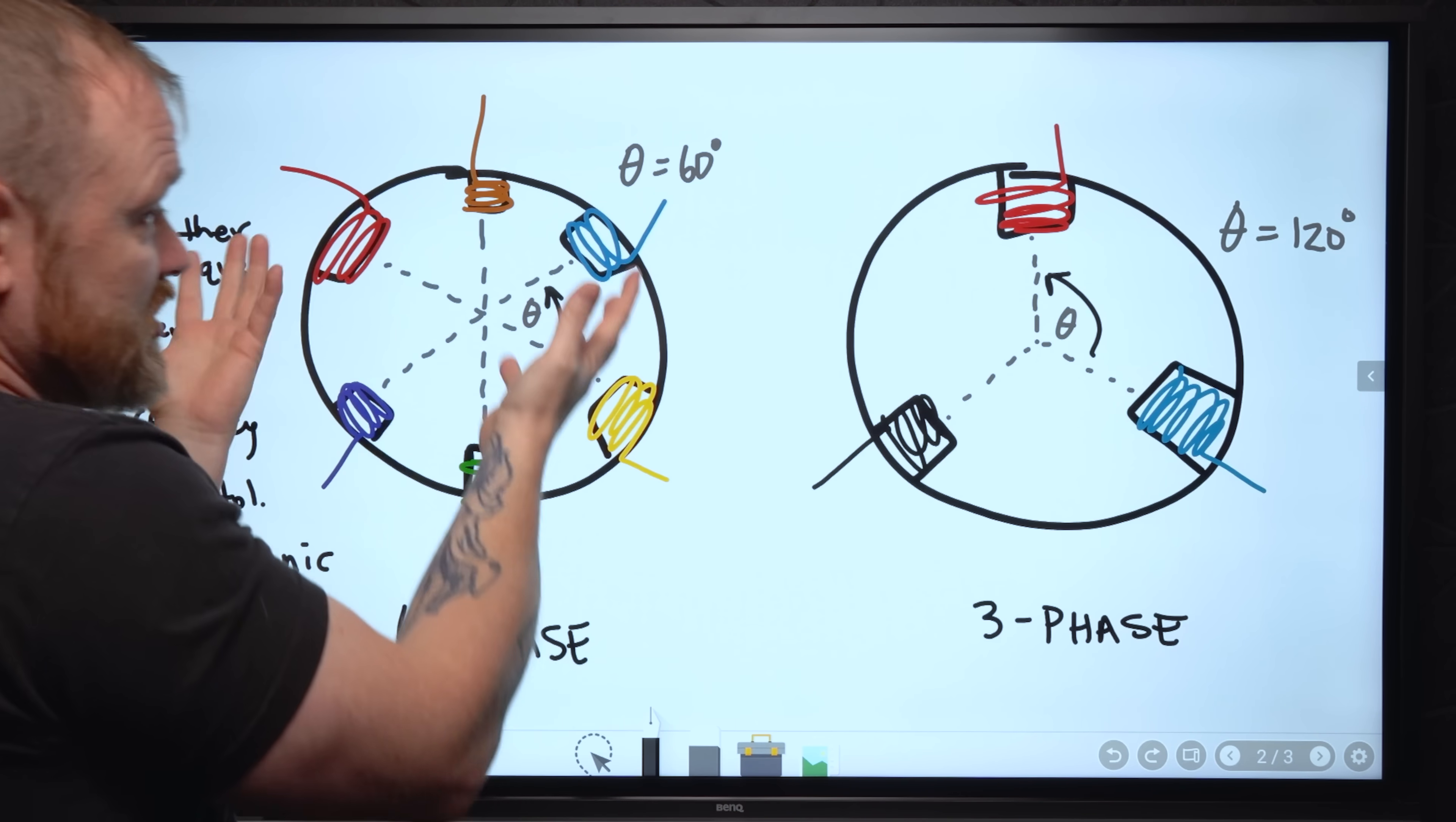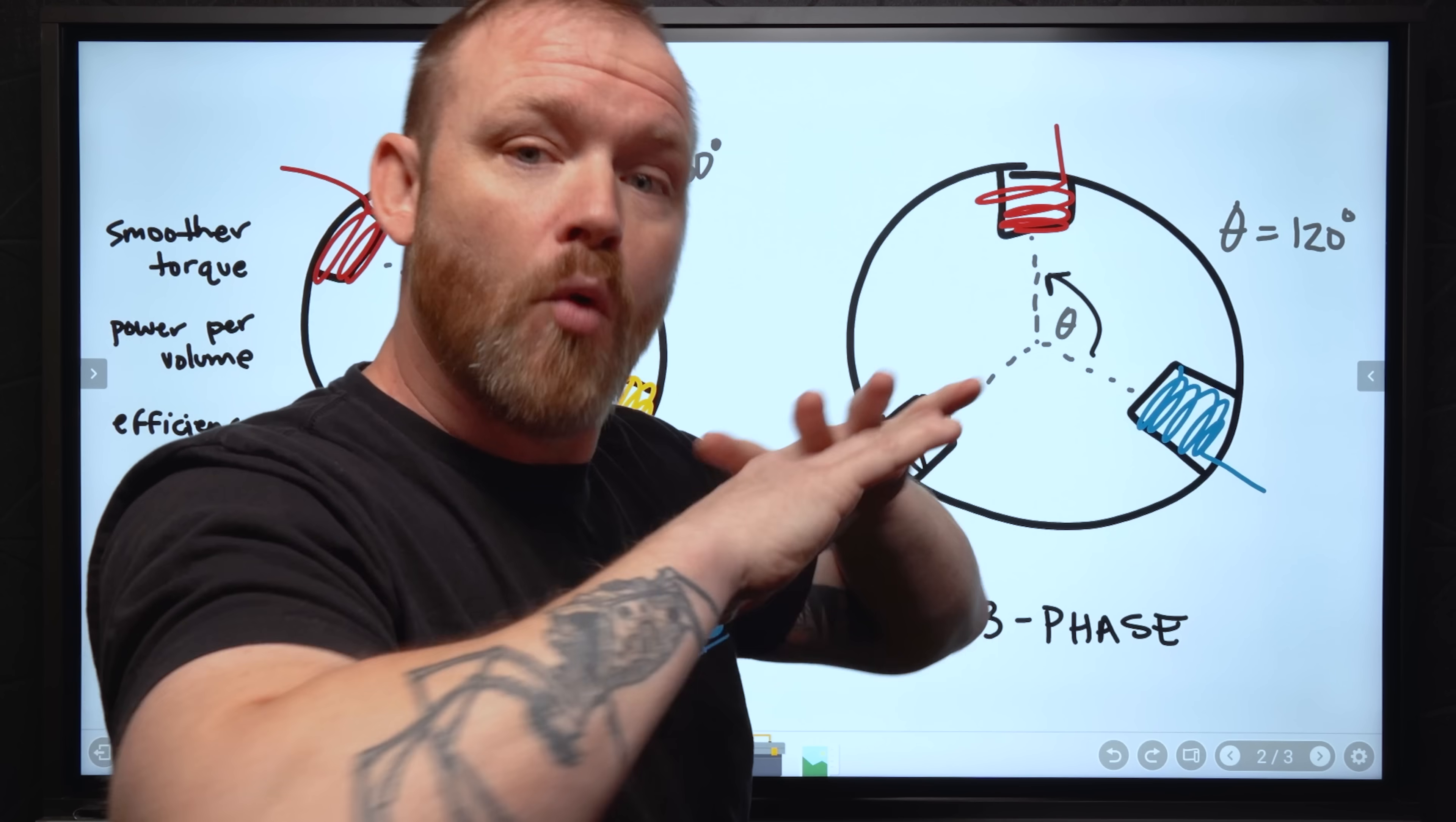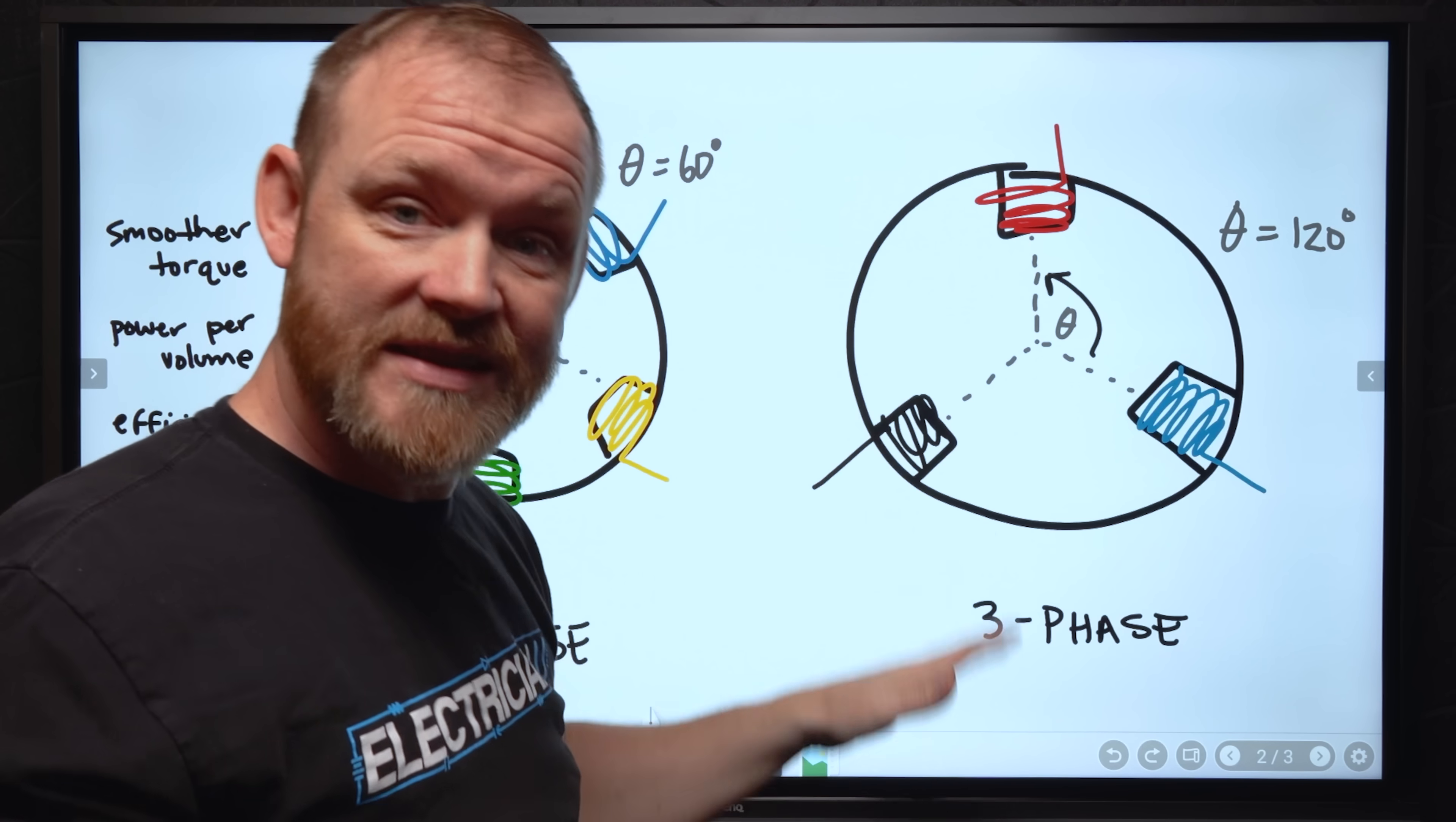You also have just more efficiency in general. Now you have six windings, so to run current through all the conductors, you have more conductors that you're running current through. So it's a little bit more efficient. You don't have as much heating on only three conductors. You're spreading it over six.